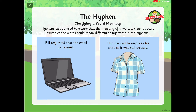A hyphen can also clarify a word's meaning. They can be used to ensure the meaning of a word is clear. In these examples the words could mean very different things without the hyphens. Bill requested that the email be re-sent. Dad decided to re-press his shirt as it was still creased.